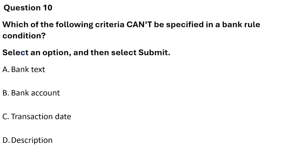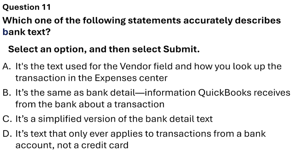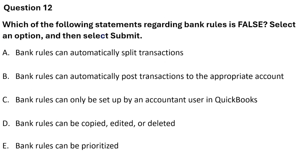Question 10: Which of the following criteria cannot be specified in a bank rule condition? Options: bank text, bank account, transaction date, description. The correct answer is transaction date. Question 11: Which of the following statements accurately describes bank text? Options include: it's the text used for vendor fields; it's the same as bank details; it's a simplified version of bank detail text; it only applies to transactions from a bank account, not a credit card. The correct answer is: it's the same as bank detail information QuickBooks receives from the bank about a transaction.